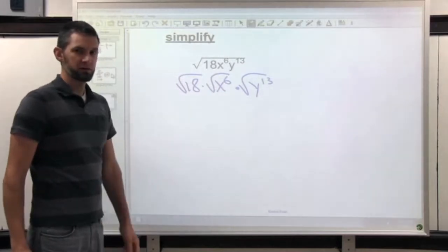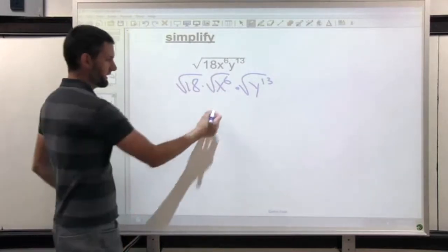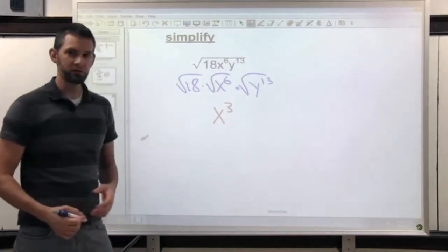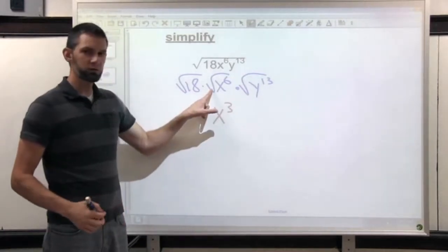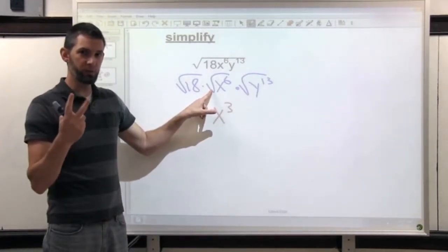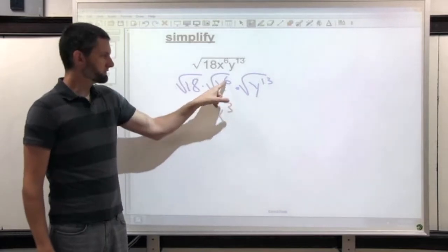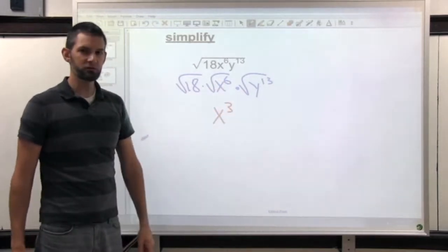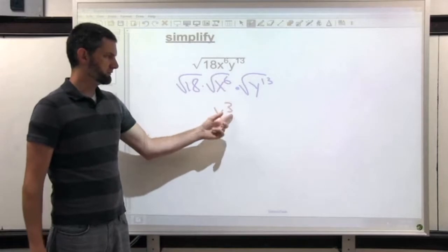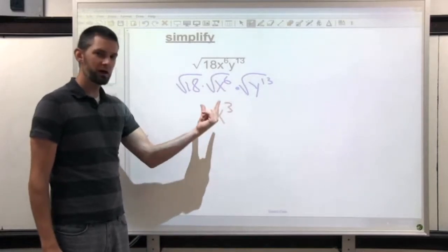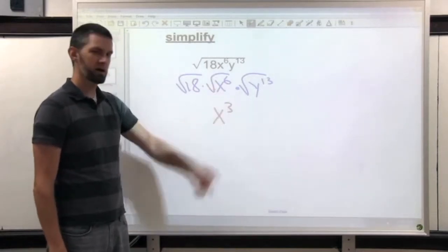X to the 6 is really going to end up as x to the 3. How do we get that? Well, square root is the opposite of squared, which is a power of 2. So we just take our exponent and we divide it by 2. 6 divided by 2 is 3. x to the 3 times x to the 3 makes x to the 6.